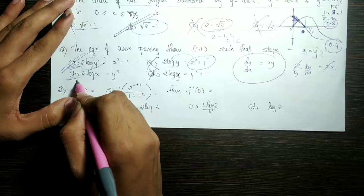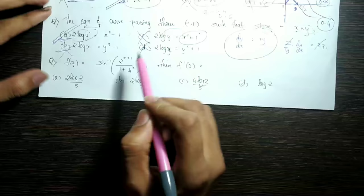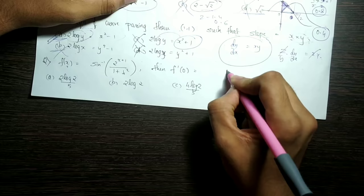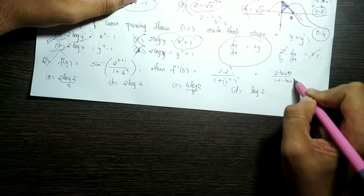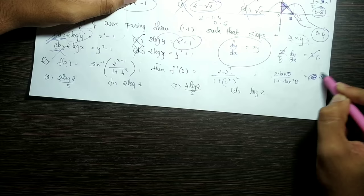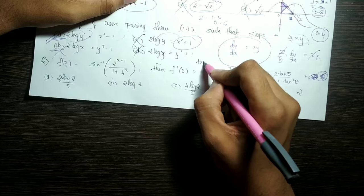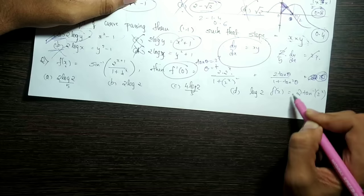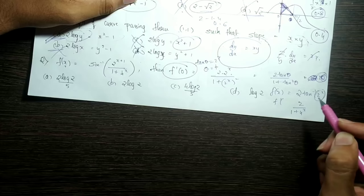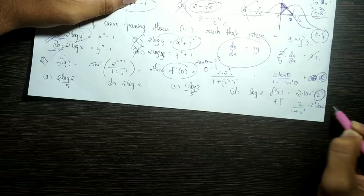Next: f(x) equal to sin inverse of (2^(x+1)) divided by (1 + 4^x). This is 2·2^x divided by (1 + (2^x)²), which is 2·tan θ divided by (1 + tan²θ), equal to sin 2θ. So sin inverse of sin 2θ is 2θ, where θ equals tan inverse of 2^x. So f(x) = 2·tan⁻¹(2^x). Then f'(x) = 2/(1 + 4^x) · 2^x · log 2. f'(0) equals 1.